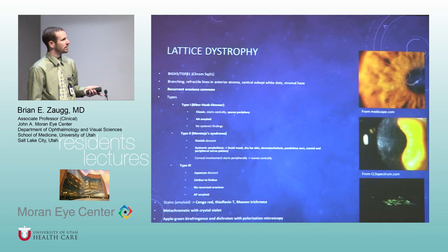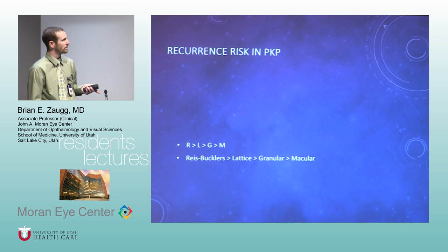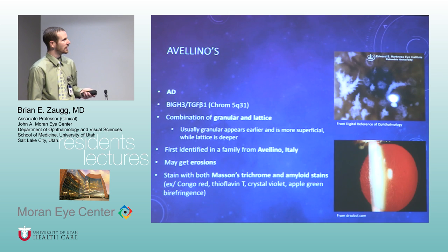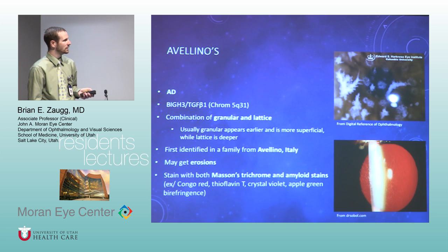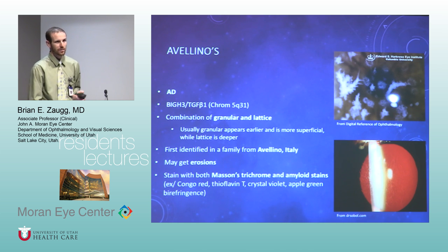Macular, granular, and lattice dystrophies — not much to add to what Mamelis covers. Again, the recurrence risk in a PK is important. Avellino is a combination of granular and lattice, also autosomal dominant. They like to ask about the TGF-beta-1 dystrophies. Erosions happen, and they'll stain with both granular and lattice stains.